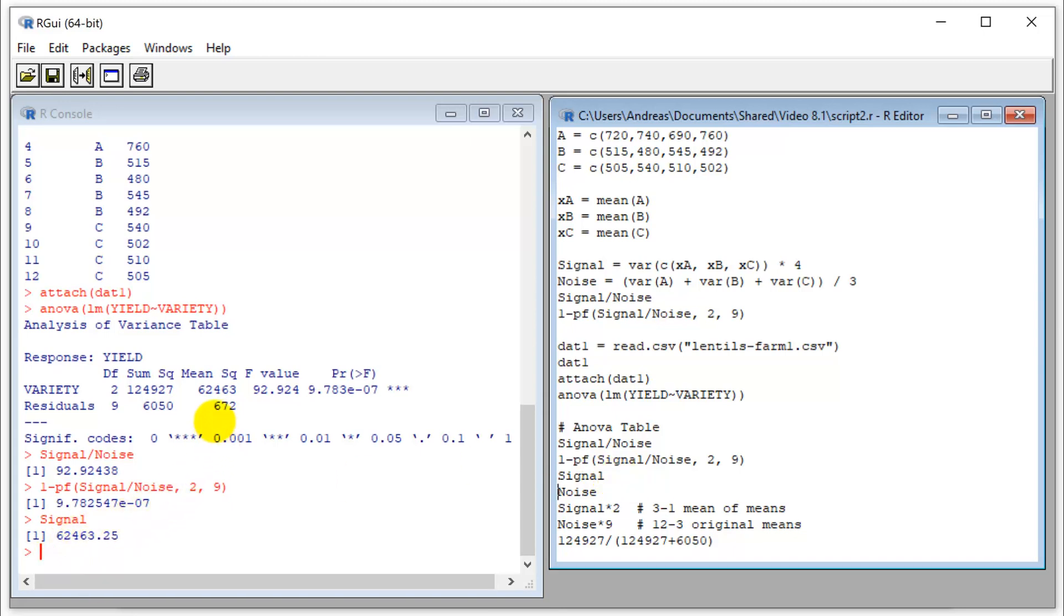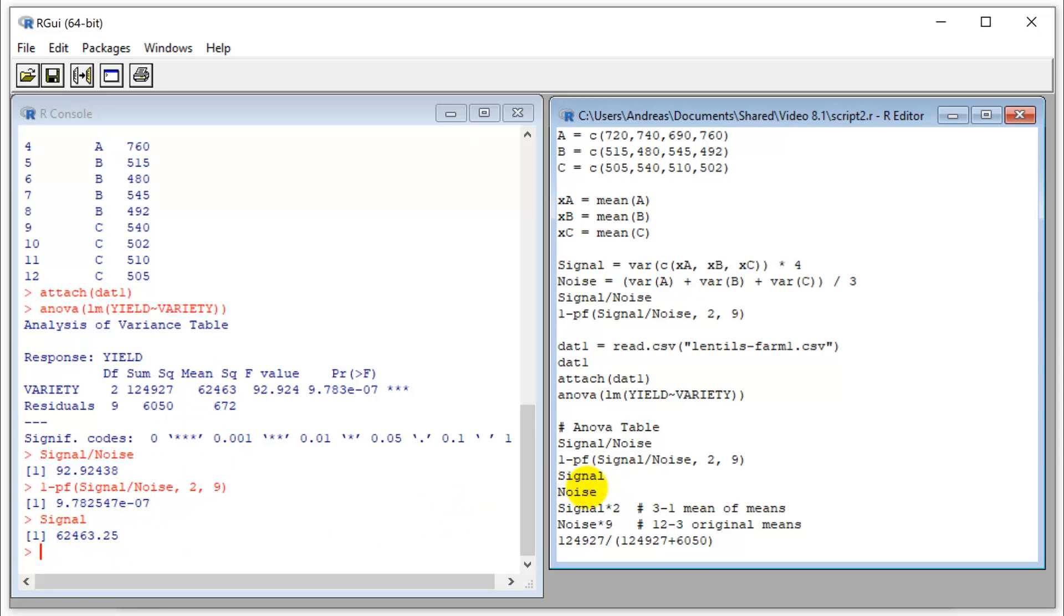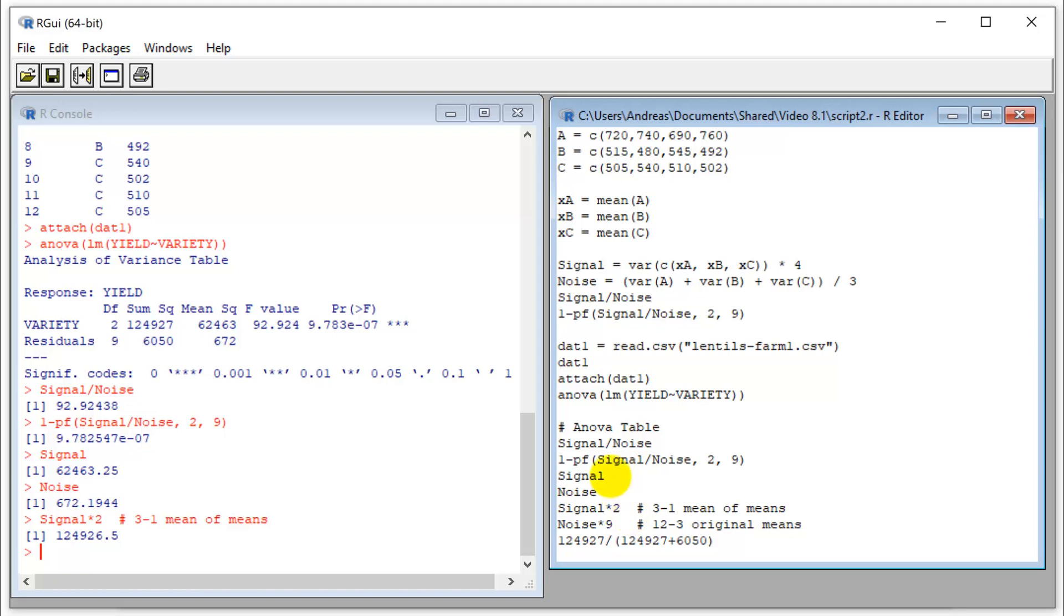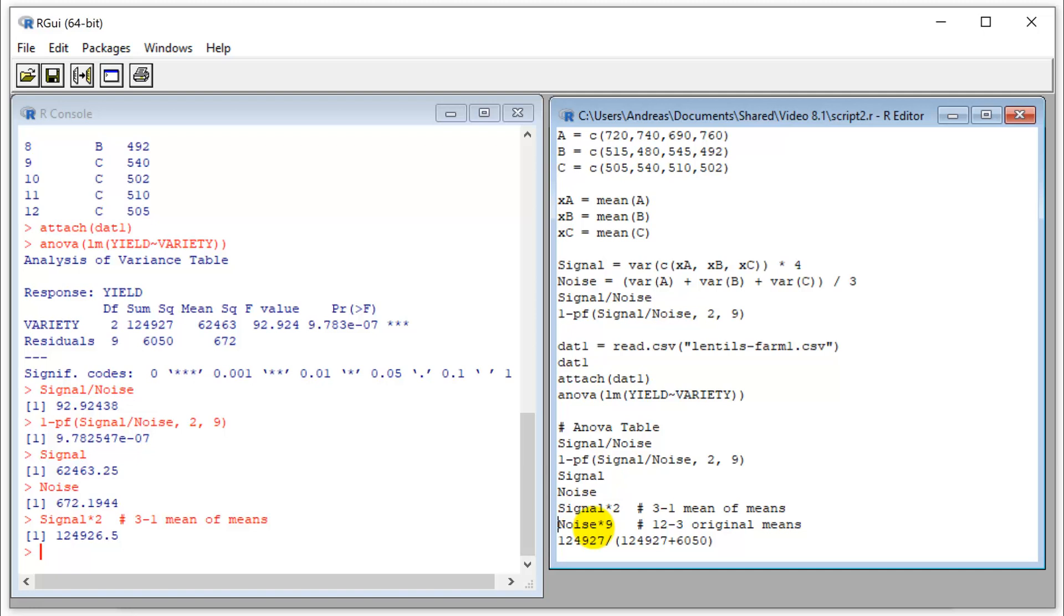That's 62,000, there it is. Let's check our noise, that's 672, right here, very nice. And now let's multiply this by the degrees of freedom to get our sum of squares. And sure enough, that's my sum of squares, and my noise, that's my sum of squares for my residual or error or noise.